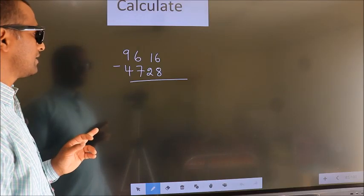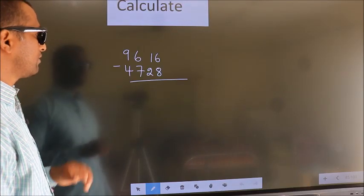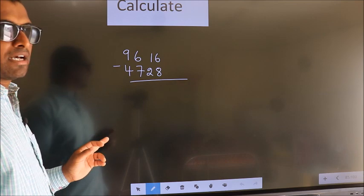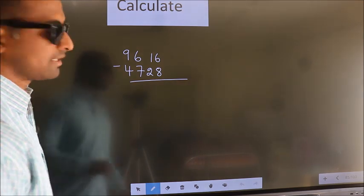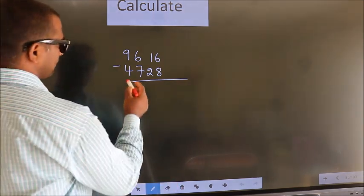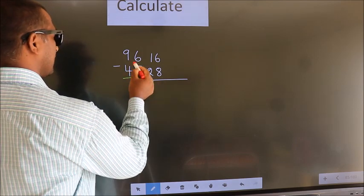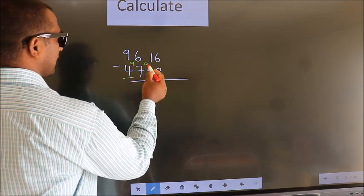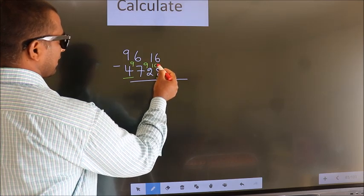Calculate 9616 minus 4728. How do we subtract faster? We leave the first digit and here we write 9, here 9, and for the last digit we write 10.